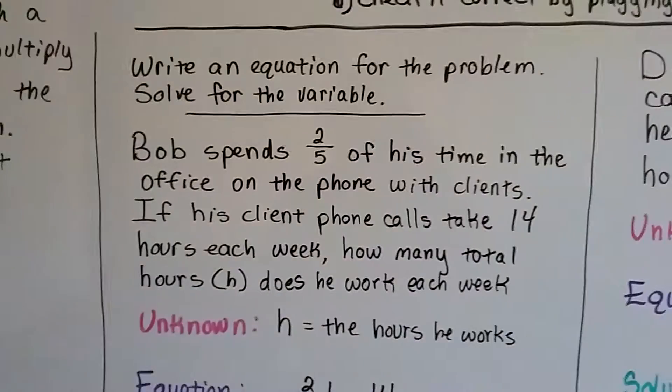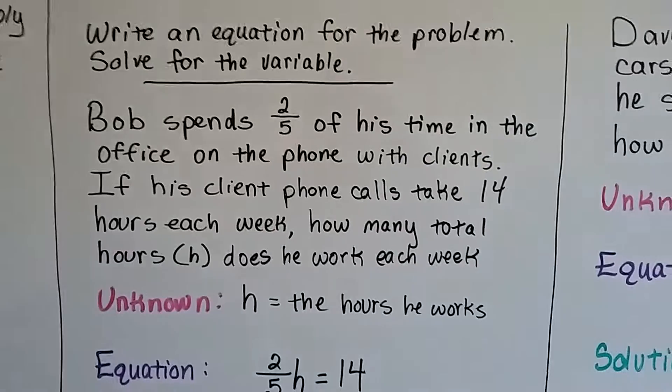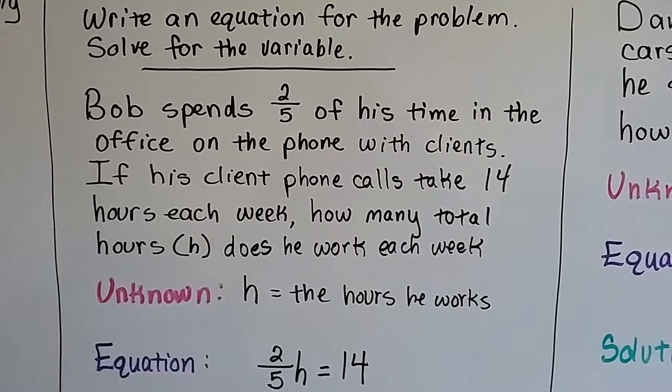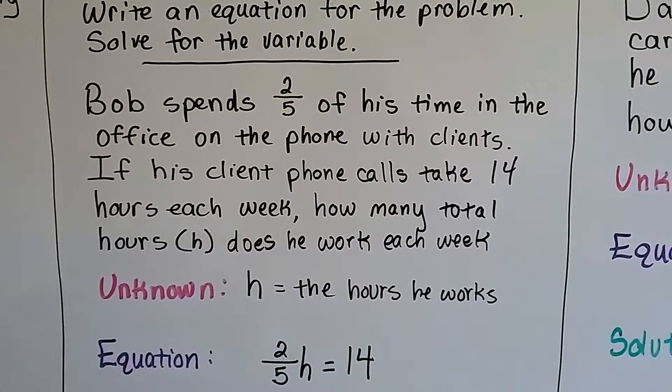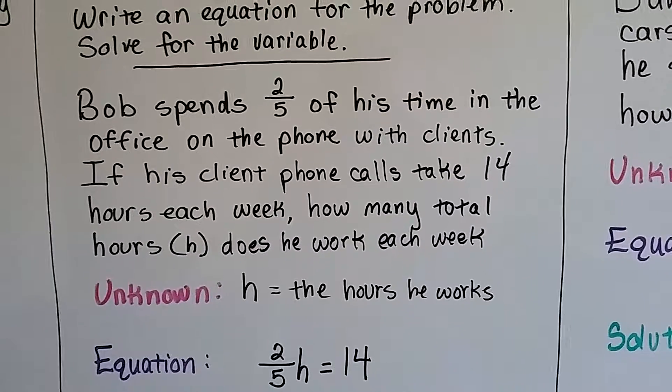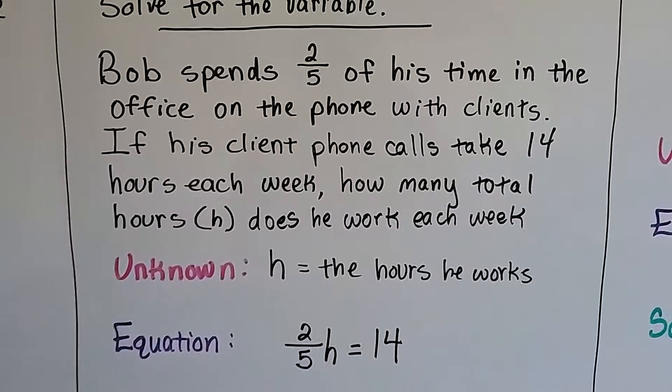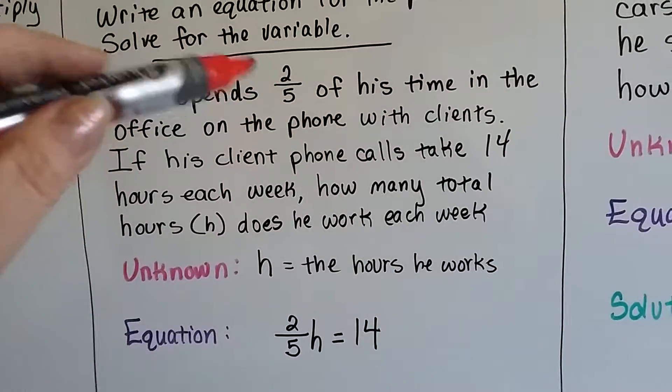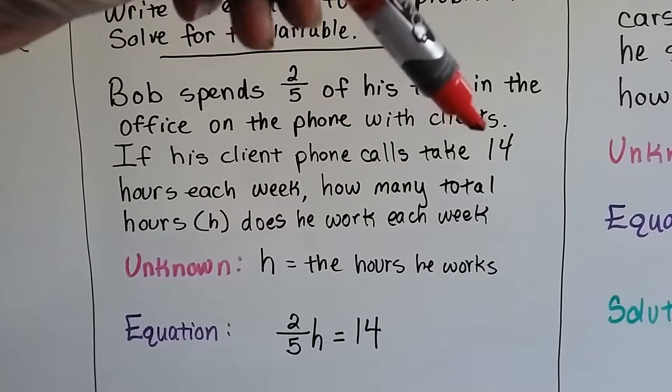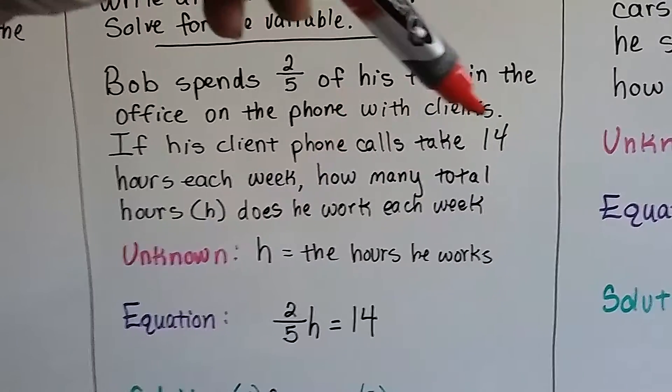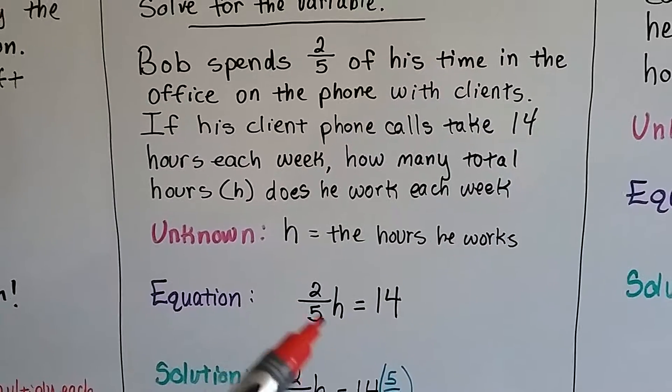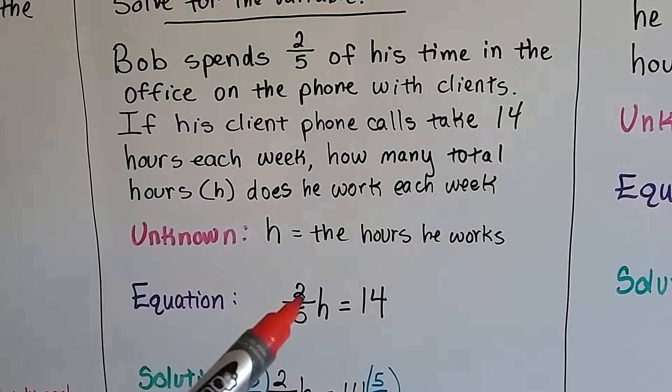Let's see what we can do with these word problems. I'm going to write an equation for the problem and solve for the variable. Bob spends 2 fifths of his time in the office on the phone with clients. If his client phone calls take 14 hours each week, how many total hours does he work each week? Our unknown is h, the hours he works each week. So our equation is going to be 2 fifths h equals 14. That's 2 fifths of his time, which is the hours, and 14 is how much time he spends on the phone.